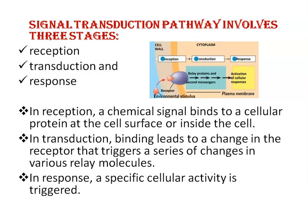In reception, the chemical signal binds to a cellular protein at the cell surface or inside the cell. Looking at this diagram, here environmental stimulus is present — the cell wall, cytoplasm, plasma membrane, and receptor are shown. In transduction, the second stage, binding leads to a change in the receptor that triggers a series of changes in various relay molecules.